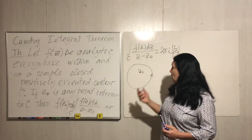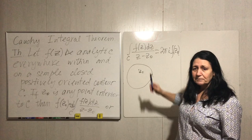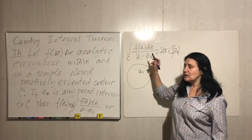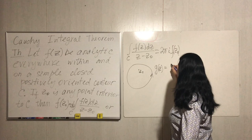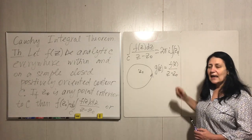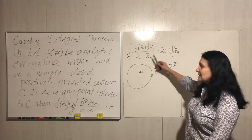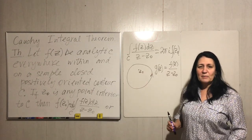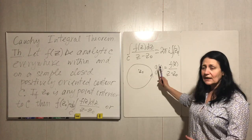Let's recall what happens if z sub zero is outside. In the integral we have f of z divided by z minus z sub zero, so we're considering g of z = f(z)/(z - z₀). The only point where g is not analytic is z sub zero. So if z sub zero is outside, then g of z is analytic inside the contour, and by the Cauchy-Goursat theorem the whole integral is zero.